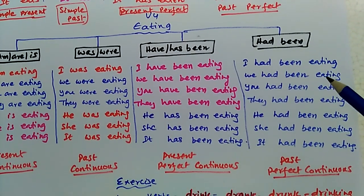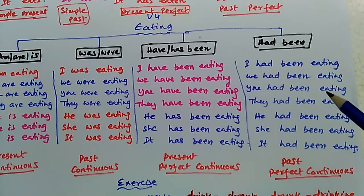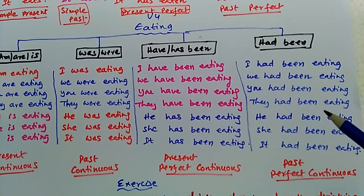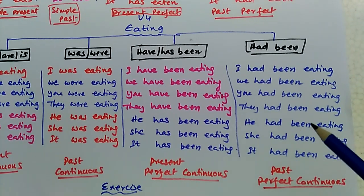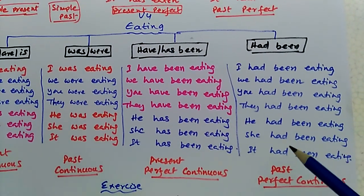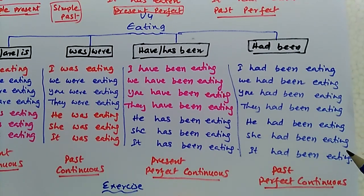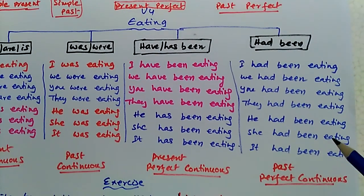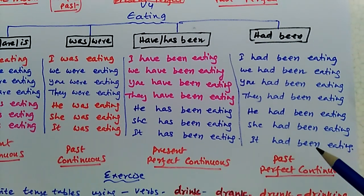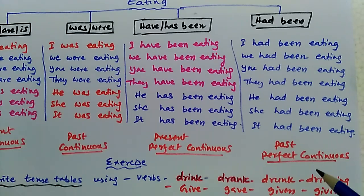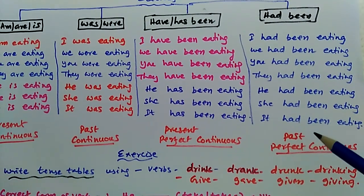By adding have or has been to verb four 'eating', we get the table: I have been eating, we have been eating, you have been eating, they have been eating, he has been eating, she has been eating, it has been eating — this is called present perfect continuous. And by adding had been: I had been eating, we had been eating, you had been eating, they had been eating, he had been eating, she had been eating, it had been eating — this table is called past perfect continuous.